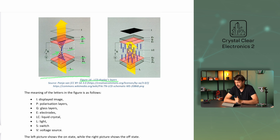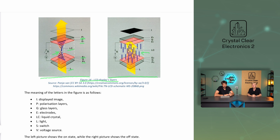This is the case shown in the left-hand figure — the pixel will then be seen as bright. In the case where a voltage is applied to the electrodes, the structure of the liquid crystal changes, resulting in light not being able to reach the output — this is the case shown in the right-hand figure. The meaning of the letters in the figure is as follows: I is the displayed image, P are the polarization layers, G are the glass layers, E are the electrodes, LC the liquid crystal, L light, S switch, and V voltage source.